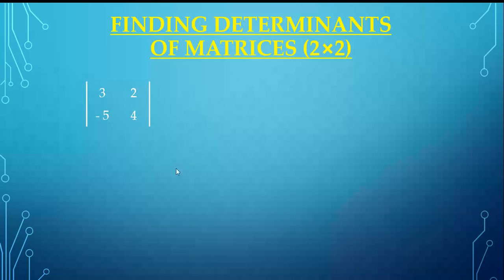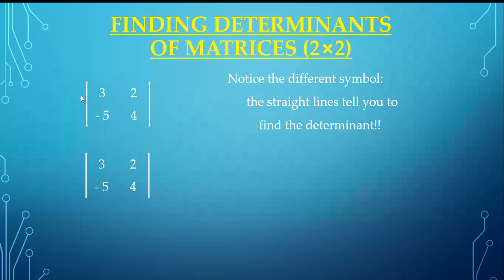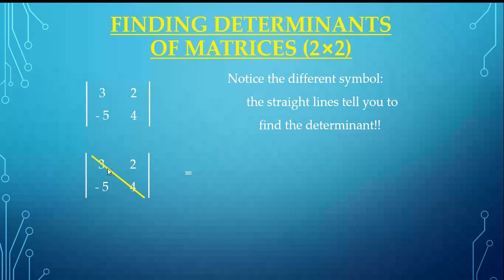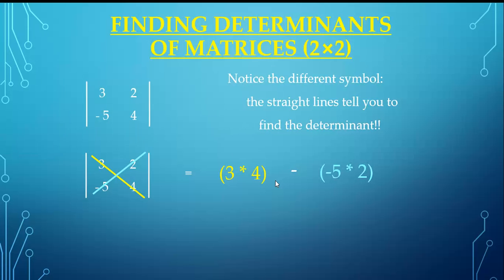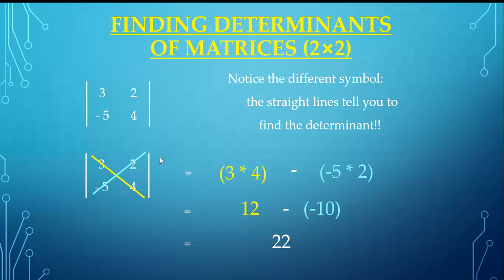For a 2×2 matrix, the determinant is found by multiplying the diagonal elements and subtracting the product of the non-diagonal elements. For example: multiply the diagonal elements, then minus the product of the non-diagonal elements. When we solve this, we get a numerical scalar value — that is always the result of evaluating a determinant.